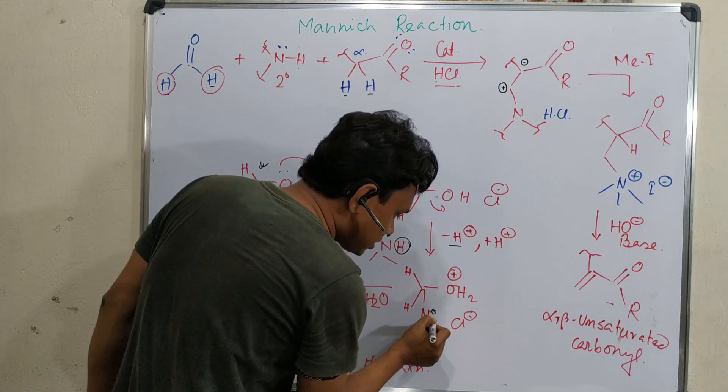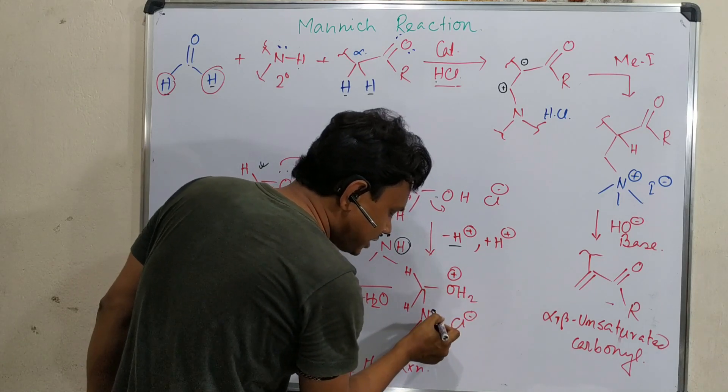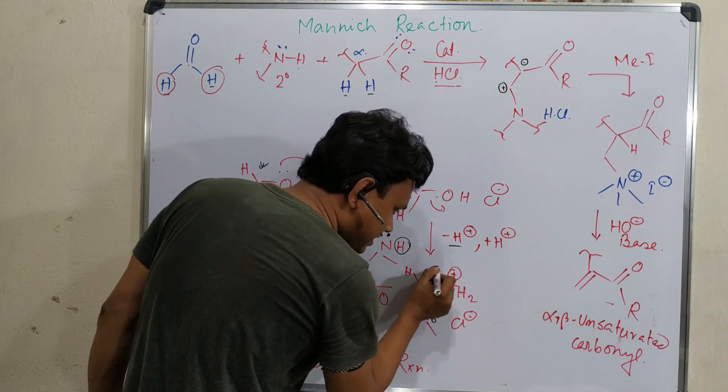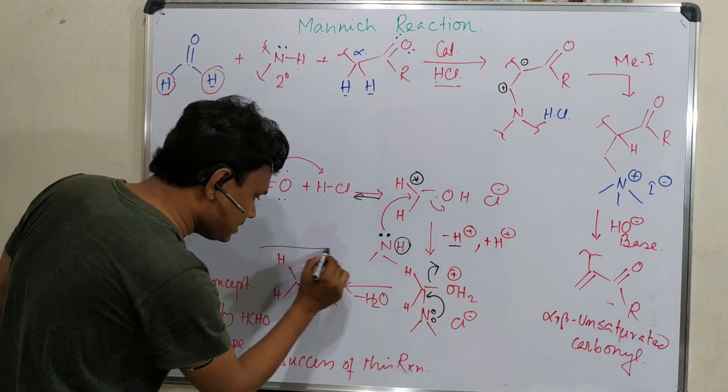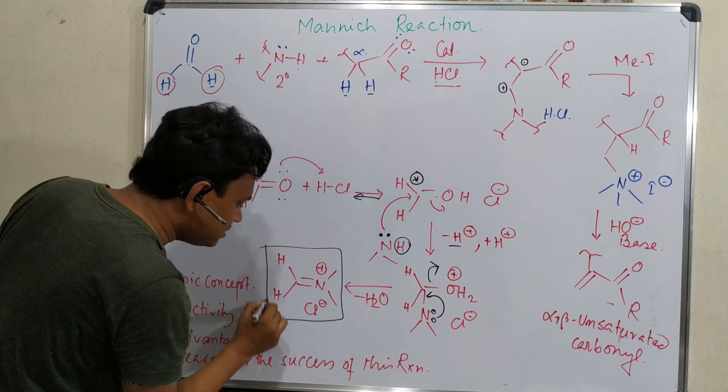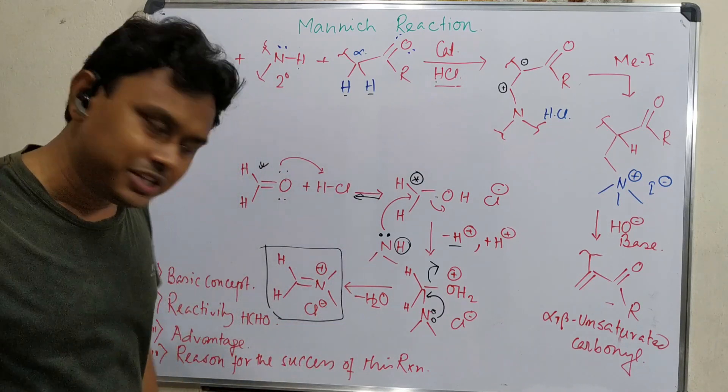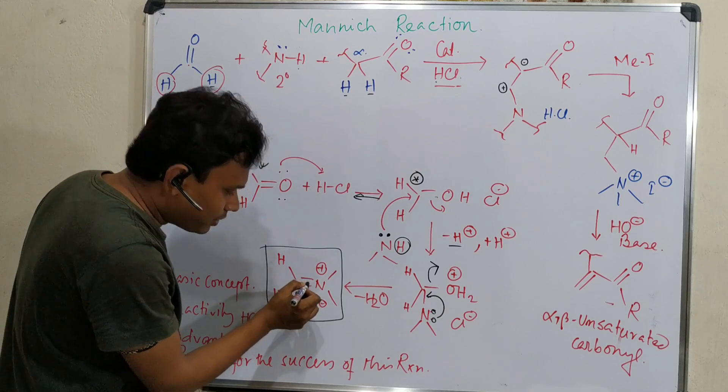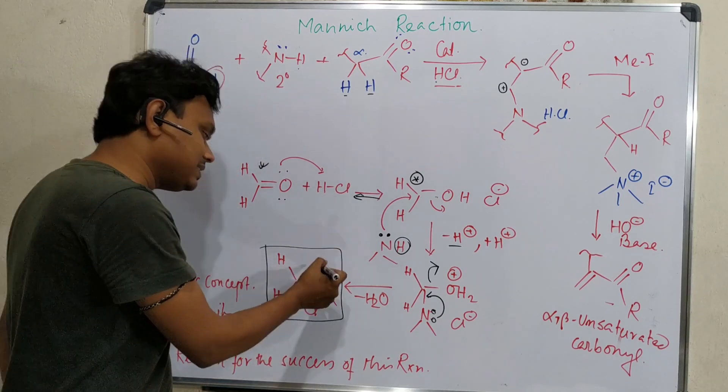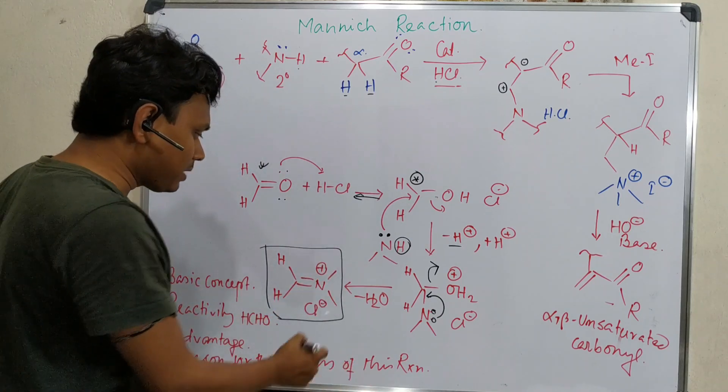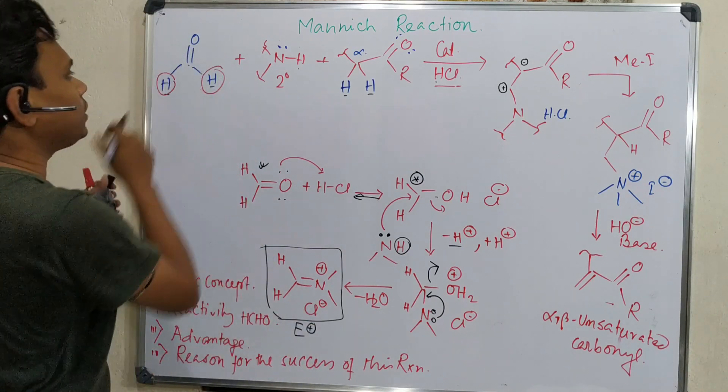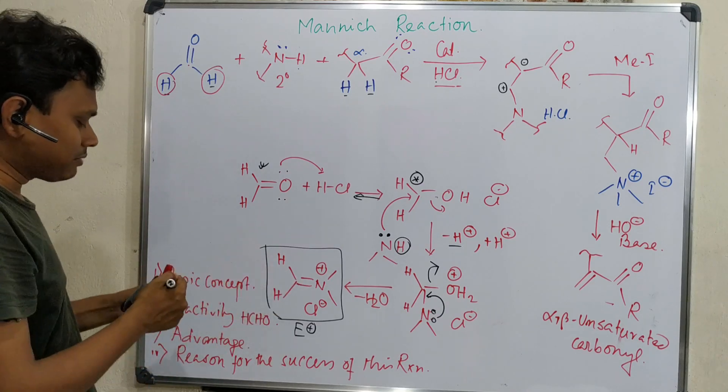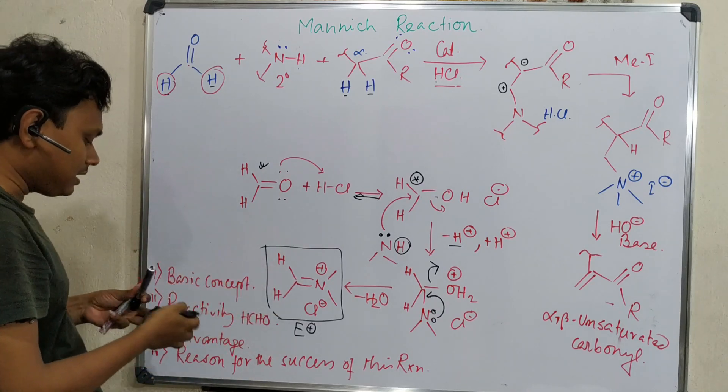After protonation here, it becomes a good leaving group. I suggest you check one of my videos about the nature of leaving groups. This nitrogen wants to leave. Nitrogen has an electron pair, it pushes and it leaves. Ultimately water eliminates, it produces this iminium cation. Why I am saying iminium? Actually C double bond N is imine and contains a positive charge, that is why iminium cation. So this is actually an electrophile here.